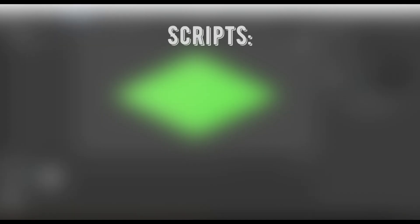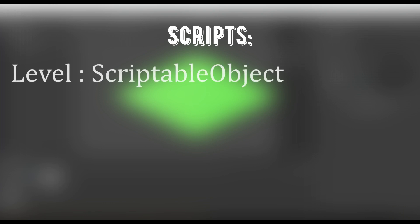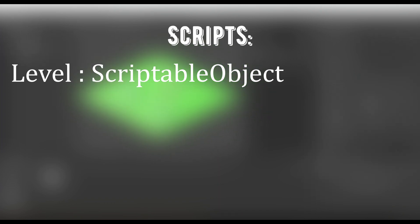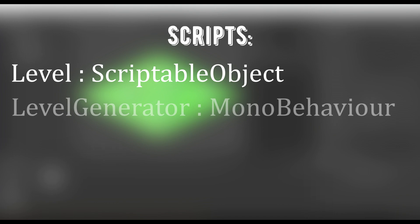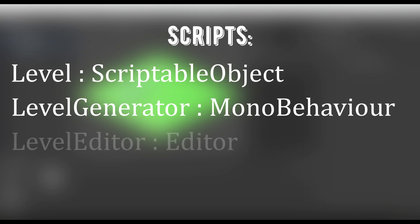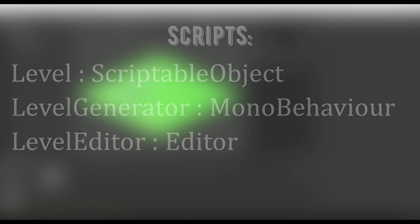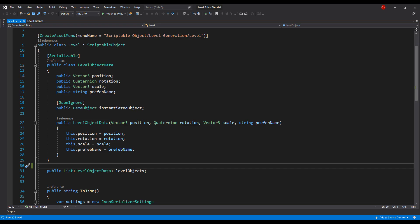Our editor will consist of three scripts. First, Level — a scriptable object that holds data needed to create an instance of the level in the game. Second, Level Generator — a script that will be provided with a level object and will create an instance in the game. Third, Level Editor — a Scene GUI editor that will provide us with tools to create a level. So let's take a look at each of those scripts.